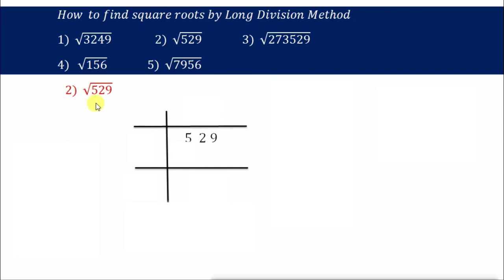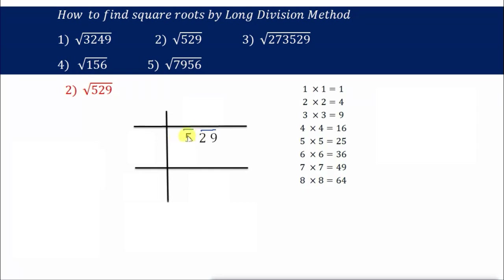Next, second one: the root of 529. Write 529 under the division line, then pair the digits from the right-hand side. We don't have a complete pair for 5, so we leave it without a pair. The first step is to find the perfect square nearest to 5. Going through: 1×1=1, 2×2=4, 3×3=9. Since 9 is greater than 5, we choose 2×2=4. So subtract 5 minus 4 equals 1.